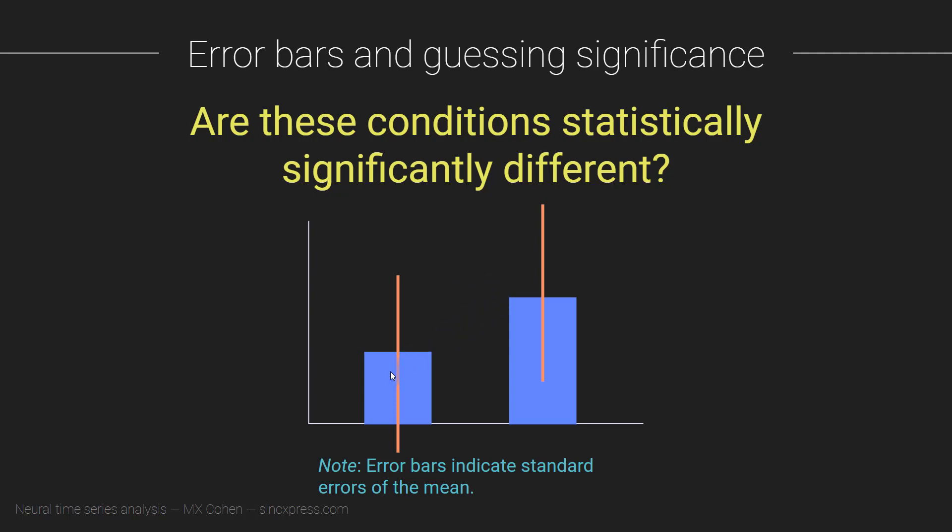Imagine that what these bars represent are beta coefficients, regression coefficients from a multiple regression that was run for each individual subject. What you see here is the average beta coefficient, and here you see the 95% confidence interval around that average. This horizontal line corresponds to zero. Now that I've told you this, what can we infer about statistical significance based on these error bars?